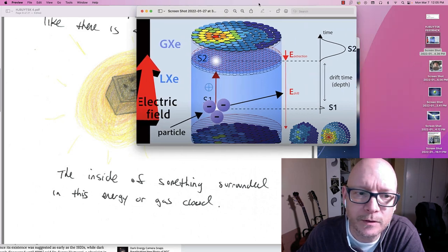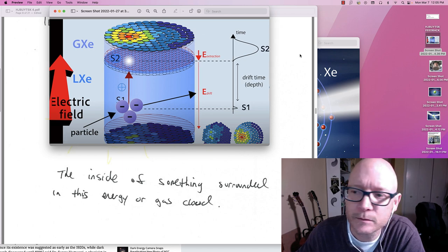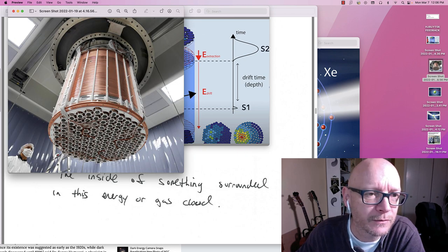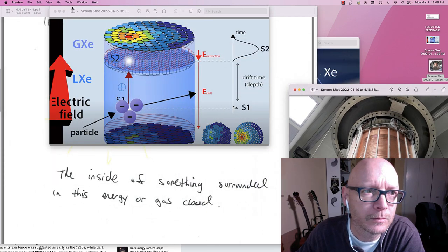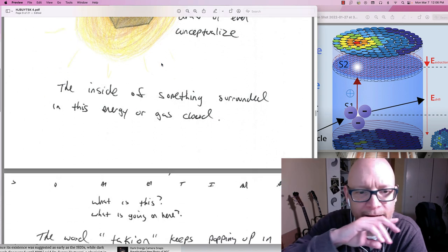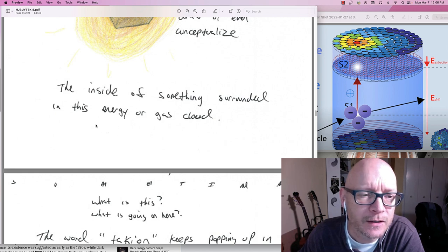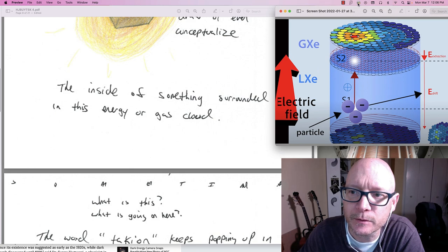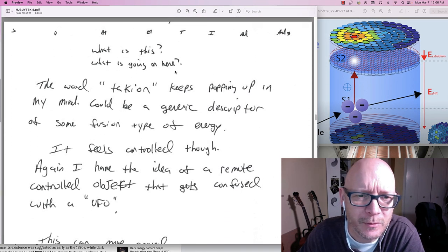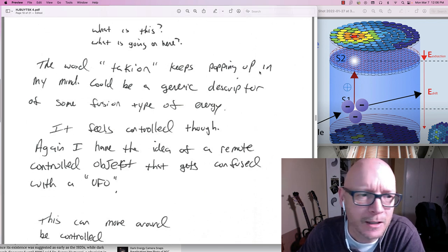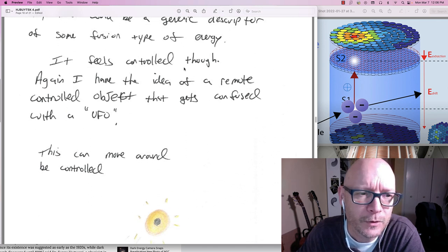But it was like being inside of this thing. Inside of this. Not an easy place to go. Even as a remote viewer. The inside of something surrounded in this energy or gas cloud. Here. What is this though? I wonder. What's going on here? The word tachyon keeps popping up in my mind. Again I think that's a hypothesized particle too. Could be a generic descriptor of some fusion type of energy. Meaning that the word tachyon keeps popping up in my mind. But that could be and is my generic descriptor of some fusion type of energy. It feels controlled though.